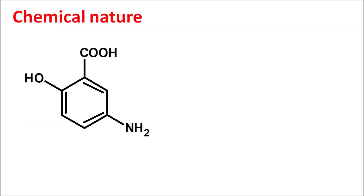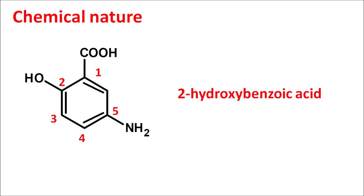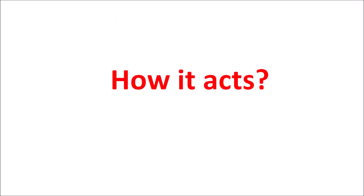Now let us look at the chemical nature of mesalamine. This is the simple structure we have already seen. For numbering, we start from the carboxylic acid — this is position one — then preference is given to the OH group, giving positions two, three, four, five. So the amine group is attached at the fifth position. The main ring is salicylic acid, also written as 2-hydroxybenzoic acid. With the amine group attached at the fifth position, it is called 5-aminosalicylic acid, which is mesalamine.